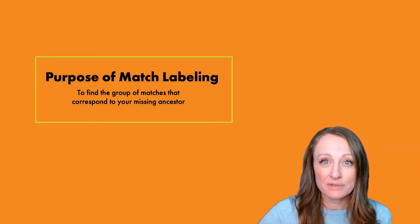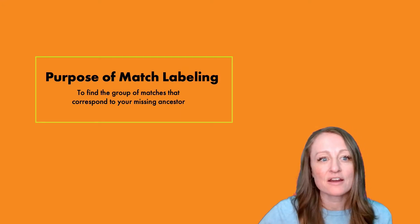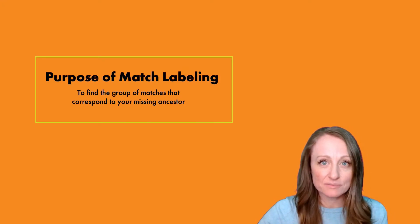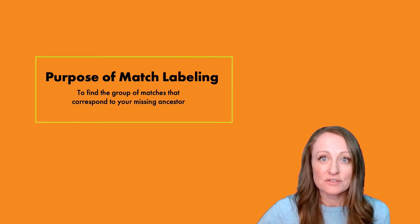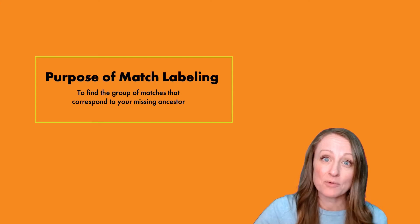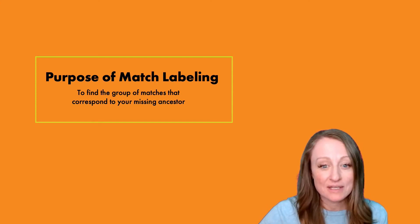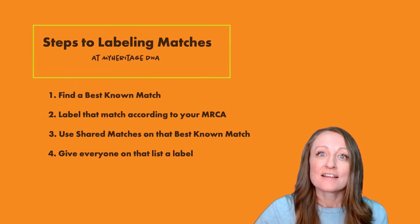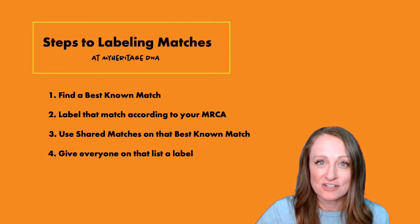The purpose of labeling your matches at any company, but here at MyHeritage, is to find the group of matches that correspond to your missing ancestor. There are lots of ways you can use match labeling, but this is the way I'm going to encourage and teach you how to use it to have the most impact in your genealogy research. Let's talk about the steps to labeling your matches at MyHeritage DNA.